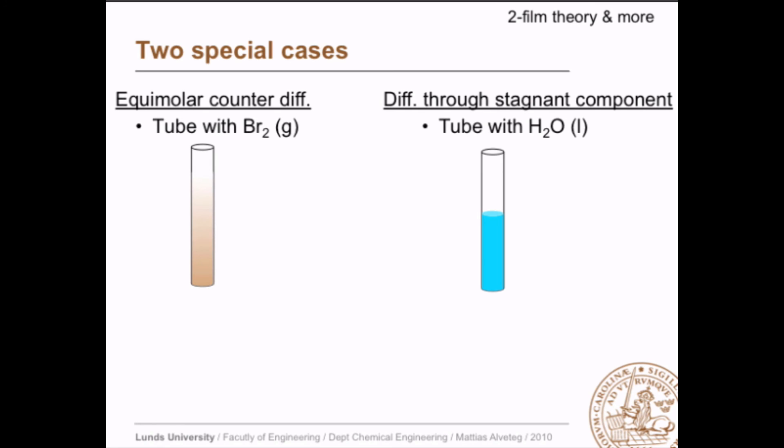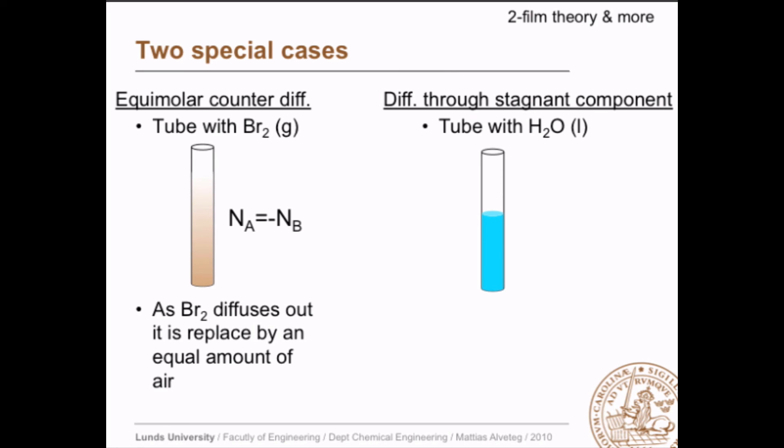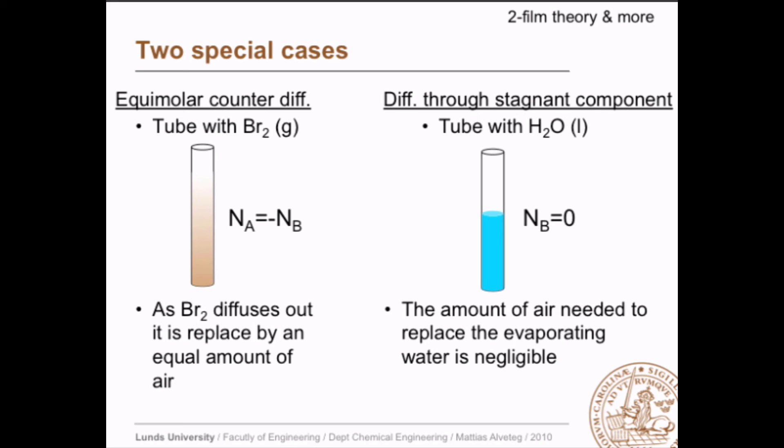Now we look at two special cases: equimolar counter diffusion and diffusion through stagnant component. In the left example, bromine gas diffuses out into surrounding air and is replaced by an equal amount of air due to the ideal gas law — each molecule occupies the same space on average. So the mass transport of bromine A equals minus the mass transport of air, hence equimolar counter diffusion. In the water evaporation case, liquid water takes much less space than gas, so the amount of air needed to replace the water is negligible — the mass transport of air into the tube is essentially zero.